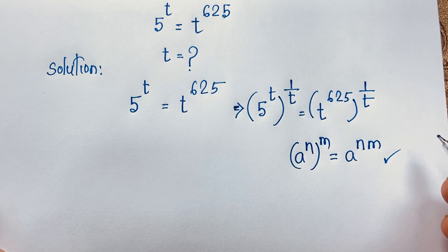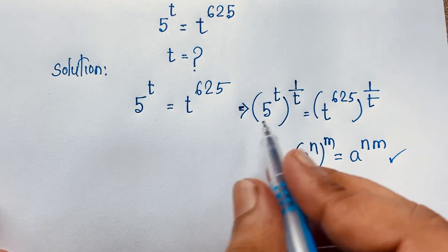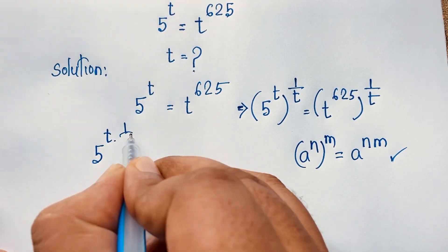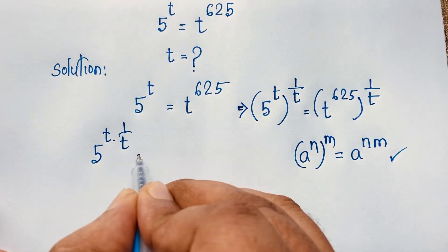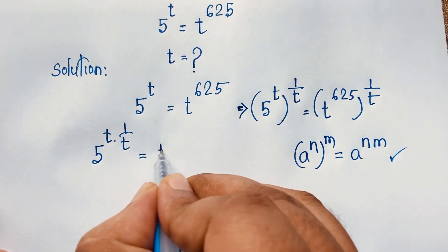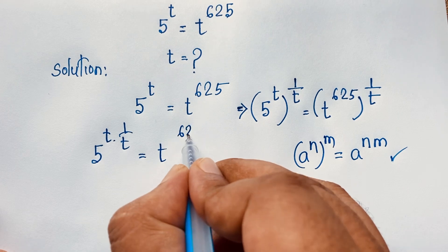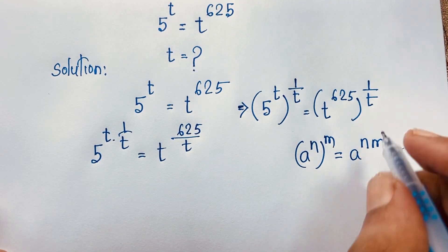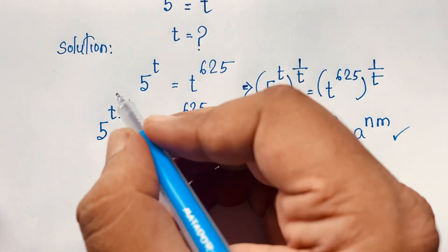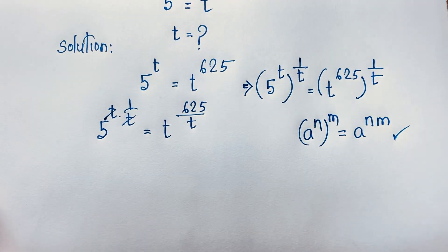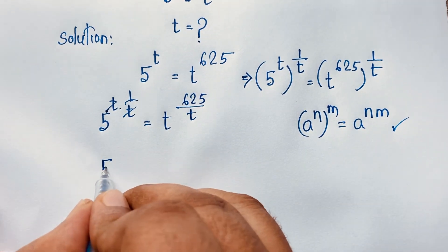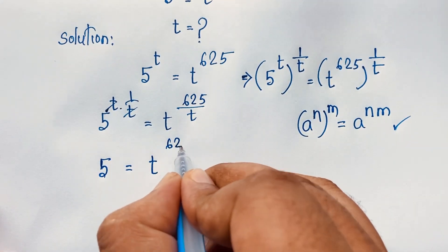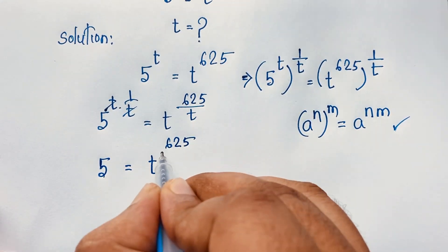If I apply this math formula here, you can see that it will be 5 to the power t times 1 over t, is equal to t to the power 625 over t. This t and this t cancel out. We find that 5 is equal to t to the power 625 over t.